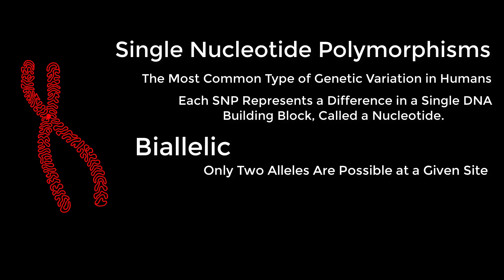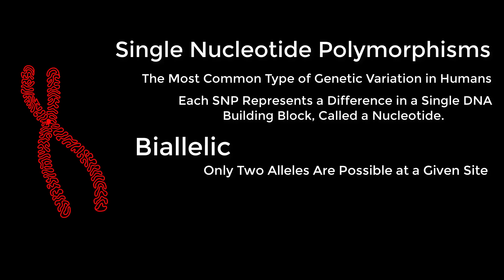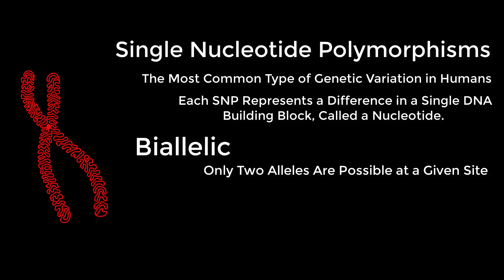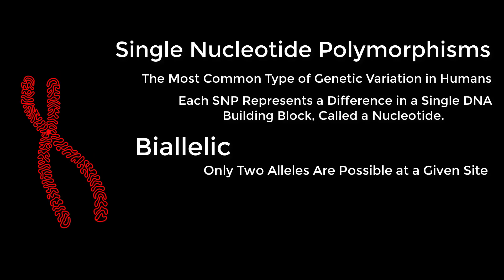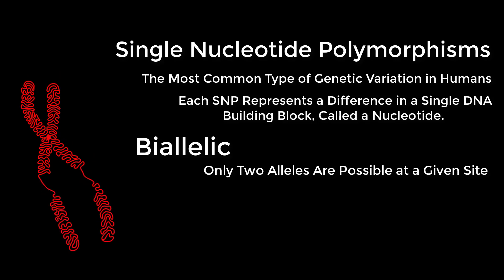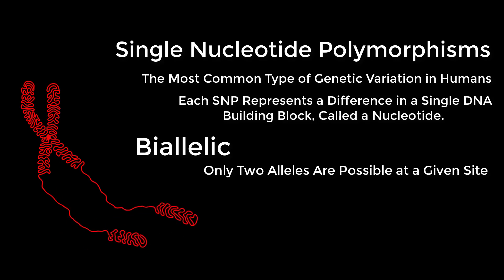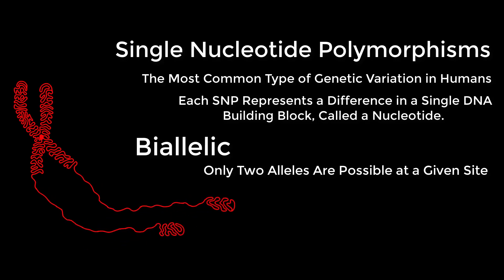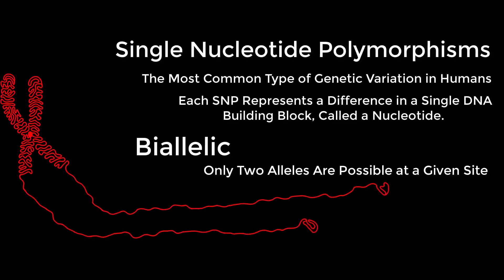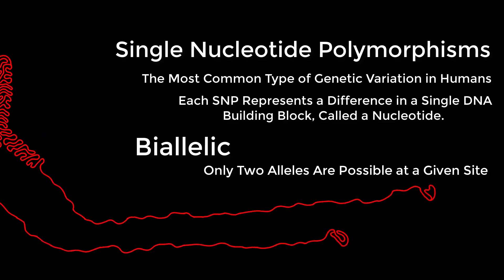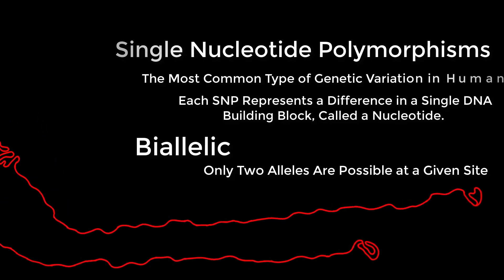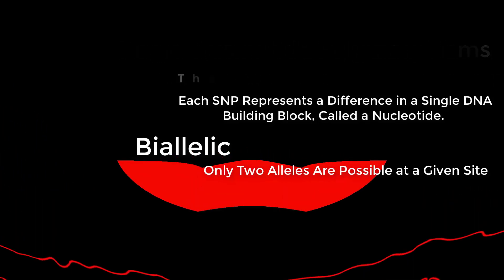The term biallelic means that only two alleles are possible at a given site. In humans, we get one allele from our father and one allele from our mother. When these terms are understood together, the importance of biallelic SNP locations becomes clear. Most known SNP locations are biallelic, so let's understand that by taking a closer look.